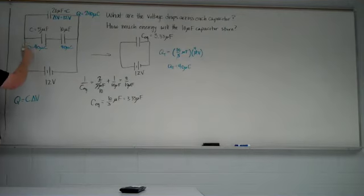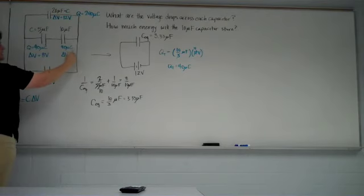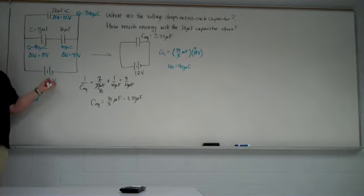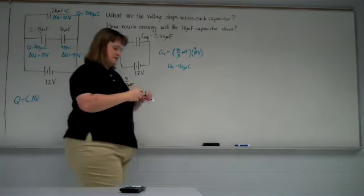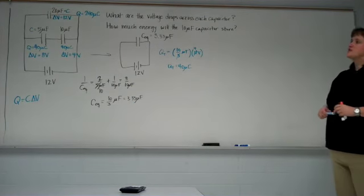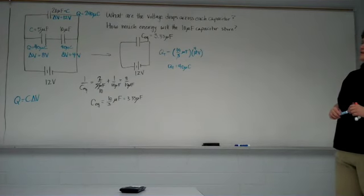So we can find delta V using the same equation again. Delta V is going to be Q over C. So 40 divided by 5, we're going to get 8 volts there. 40 divided by 10, we're going to get 4 volts there. Notice 8 plus 4 is 12. They add up to be the 12, which is necessary. So the 20 microfarad capacitor ends up with all 12 volts. The 5 ends up with 8 and the 10 ends up with 4.